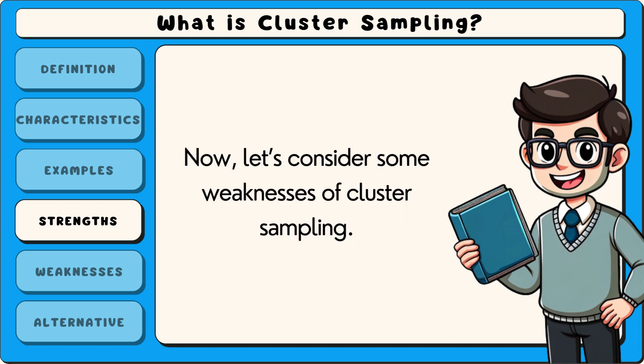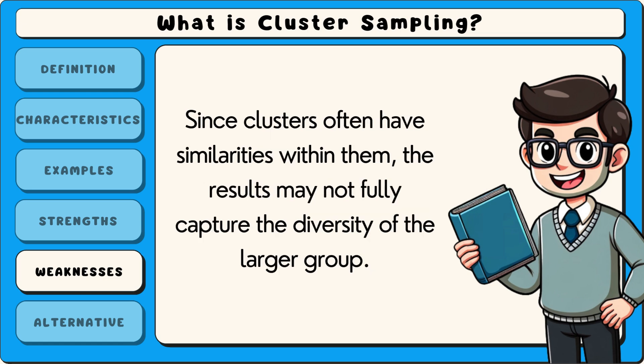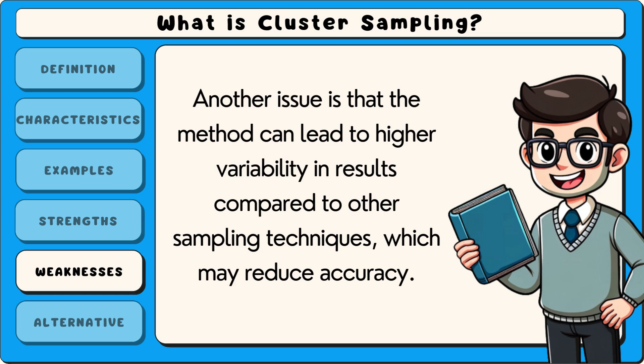Now let's consider some weaknesses of cluster sampling. One weakness is that it can introduce sampling bias if the selected clusters are not truly representative of the entire population. Since clusters often have similarities within them, the results may not fully capture the diversity of the larger group. Another issue is that the method can lead to higher variability in results compared to other sampling techniques, which may reduce accuracy.